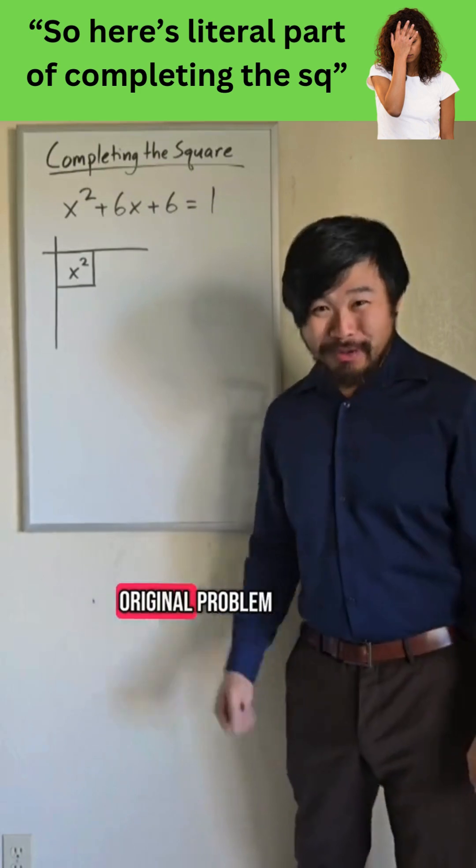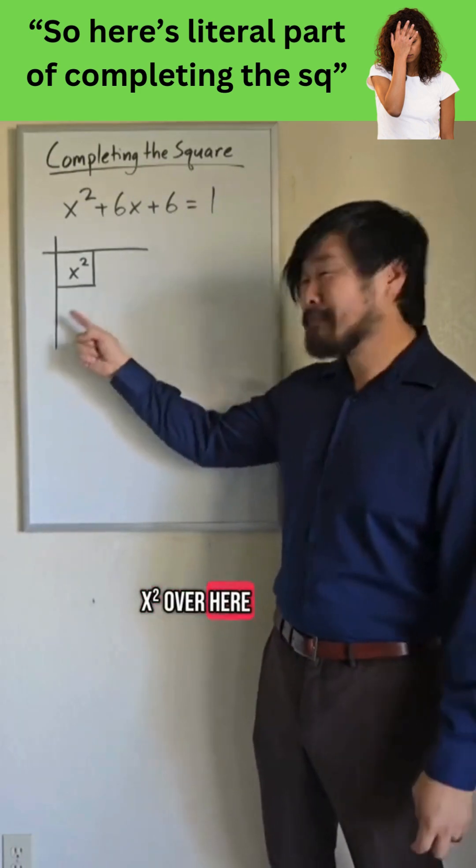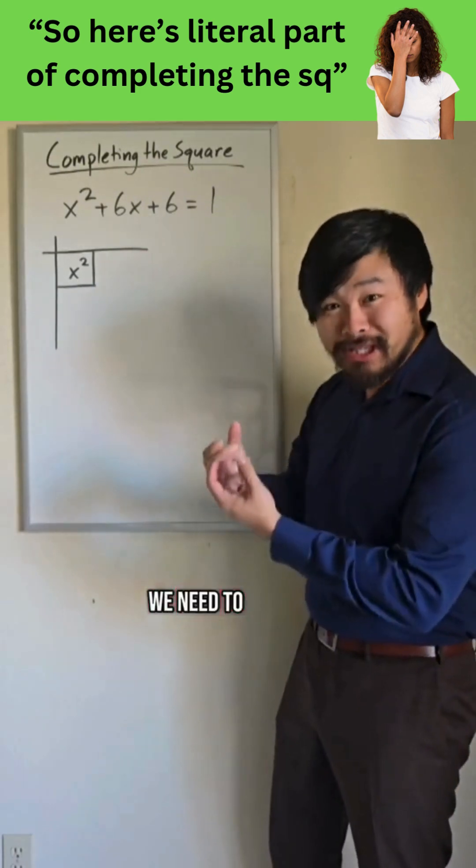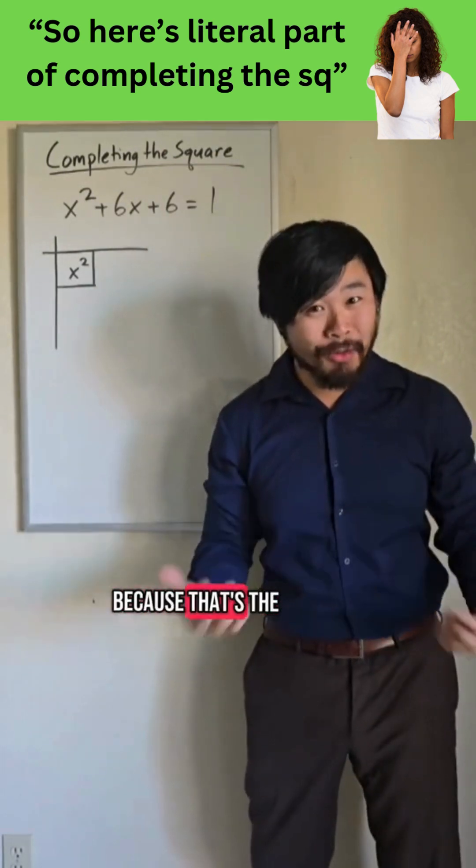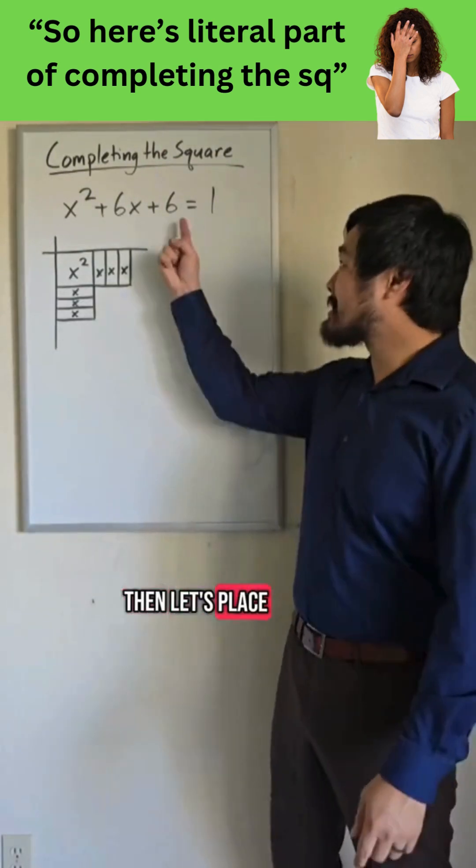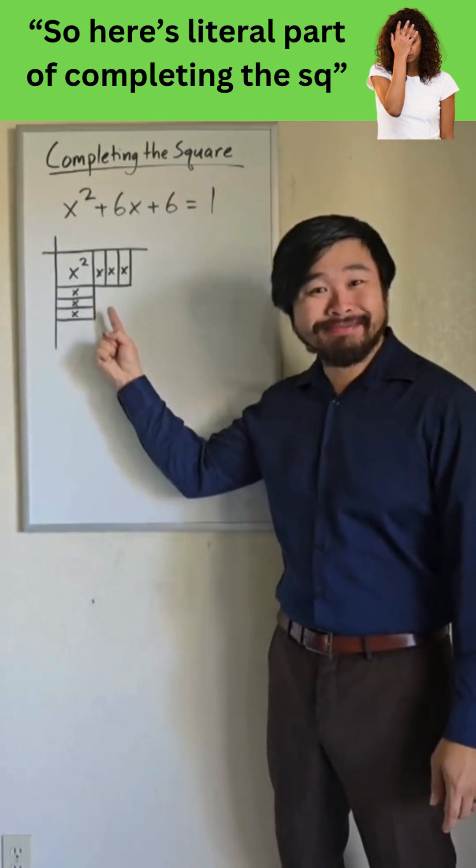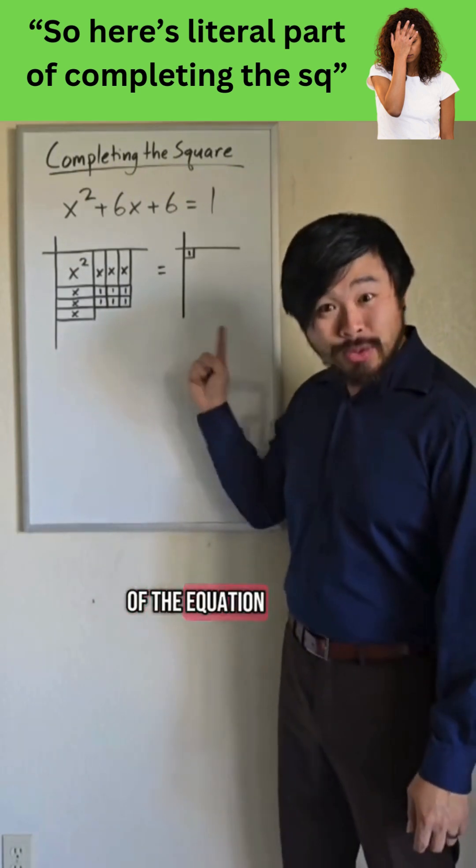Now, let's go back to our original problem. We have our x squared over here, and with our x's, we need to split them in half, and put half up here and half over here, because that's the only way we can make a square. Then let's place the 6 ones in this area. And let's show the other side of the equation as well.